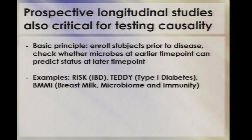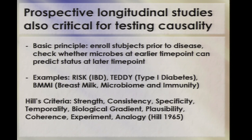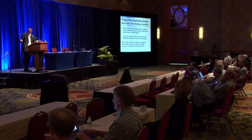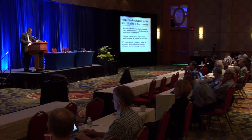Prospective longitudinal studies can also be critical for testing causality. The idea is to enroll subjects prior to disease and figure out if you can predict who's going to get the disease from the microbes at earlier time points. There are examples like RISK, TEDDY, BMMI, and others doing this now. As Robbie Klein pointed out to me, for this approach you want to use Hill's criteria — looking for the strength and consistency of association, whether the association is plausible based on what you know about mechanism, and so forth — rather than necessarily being able to prove transmission.